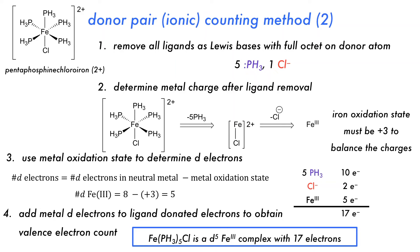To get the total electron count around the iron center: five phosphine ligands donate 2 electrons each for 10 electrons; one anionic chloro ligand donates 2 electrons; and iron(III) has 5 d electrons. The total is 10 + 2 + 5 = 17 electrons around the metal center. This d5 iron(III) complex has 17 electrons and does not obey the 18 electron rule, though it is still possible to form and will likely be stable.